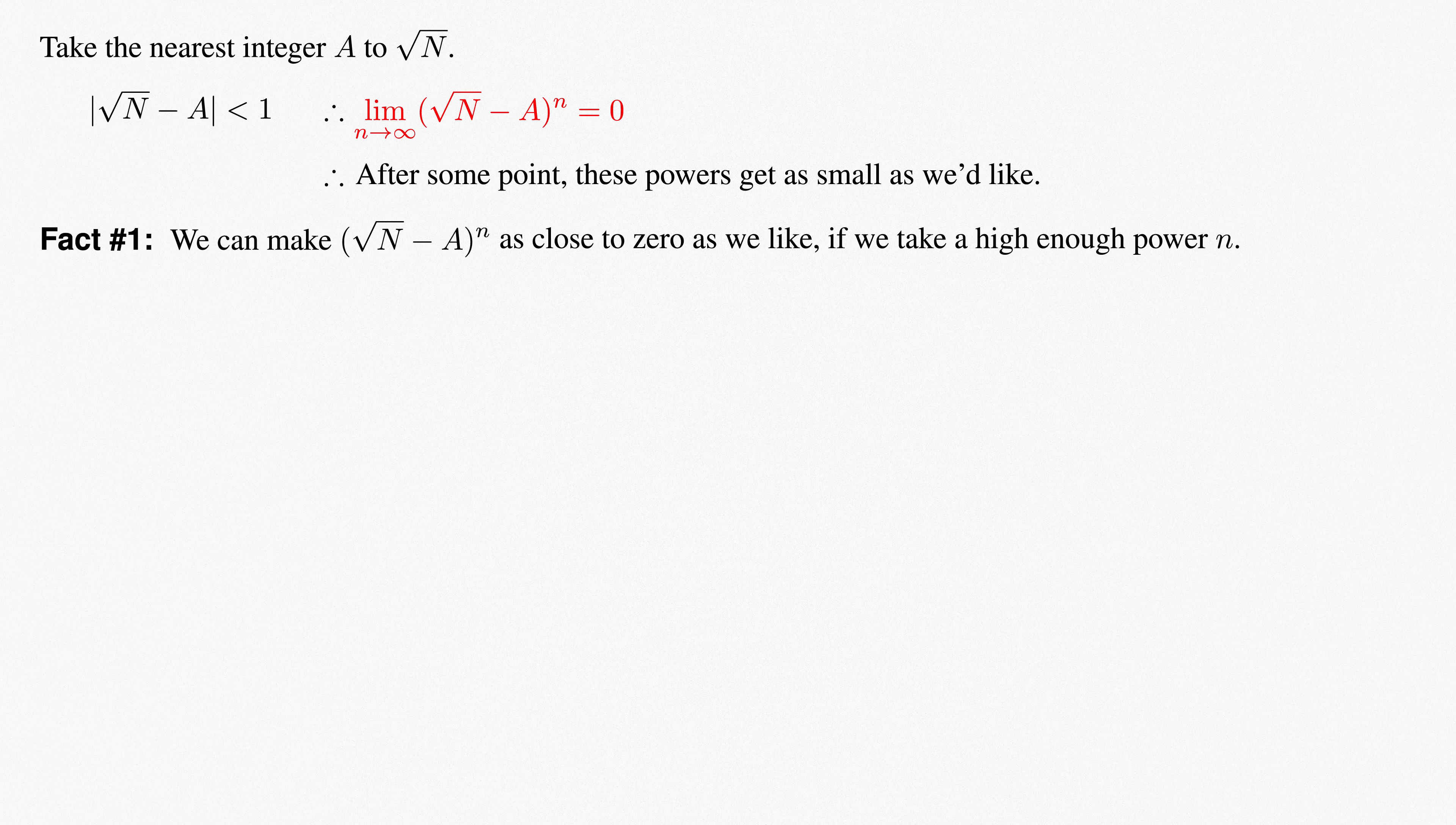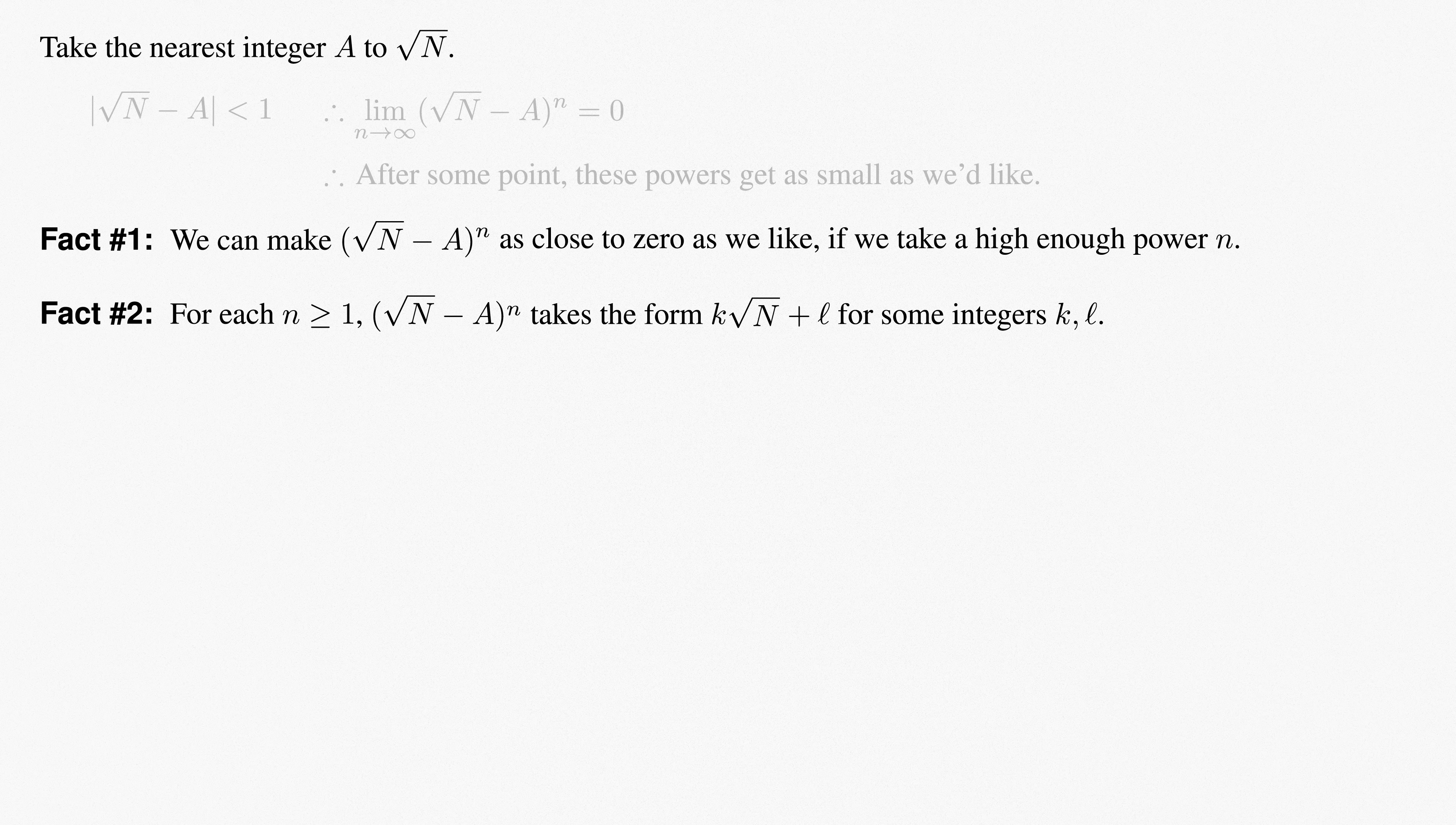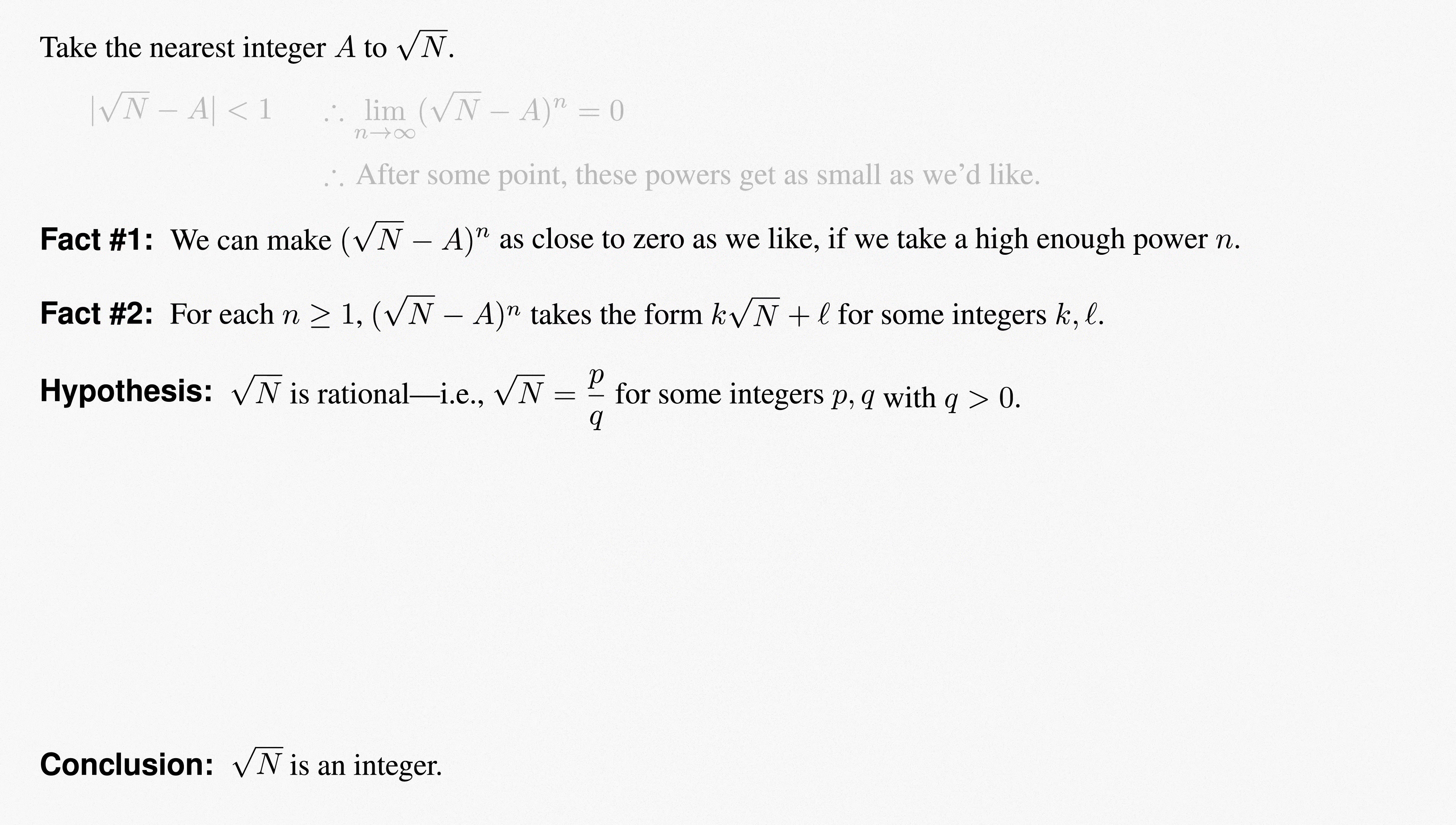We could start with any positive integer capital N, and take a as the closest integer to root n. Fact number one would still hold. The powers of the difference still go to zero, because root n and a differ by strictly less than 1. Fact two would also still hold. All of these powers would take the form k root n plus l for some integers k and l. If we suppose that root n is rational, which it might or might not be, the same argument above lets us deduce that root n equals a. In other words, that root n is an integer. What we can prove is that if root n is rational, then root n is an integer.